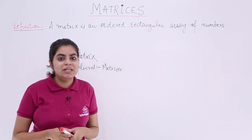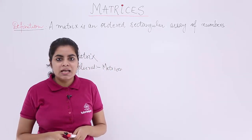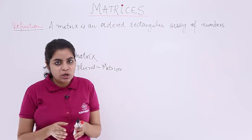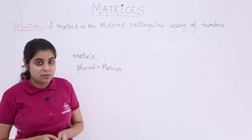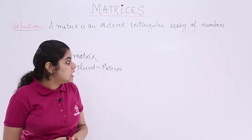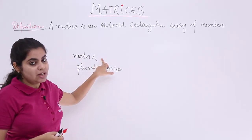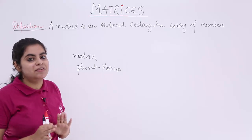That means I have been given many numbers and I am basically following an arrangement of those numbers. So one would be matrix, more than one would be matrices.